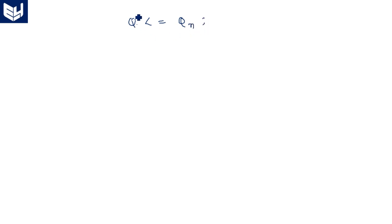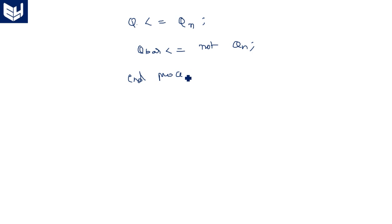Q_bar is assigned as the complement: Q_bar <= not qn. This completes the VHDL behavioral model for the JK flip-flop with preset and clear in the digital IC design subject. Thank you.